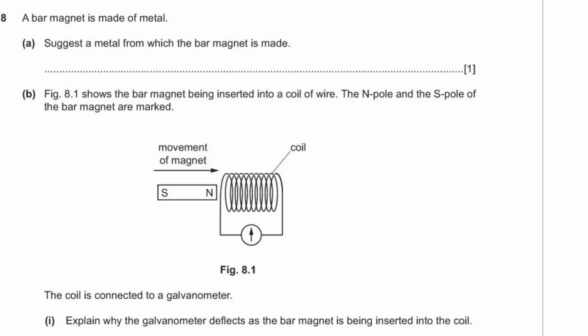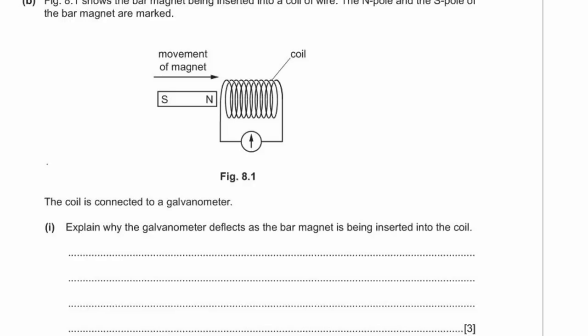Question eight: a bar magnet is made of metal — the best material is steel. Steel is cheap, plentiful, and magnetically hard, meaning once you magnetize it, it keeps its magnetism. Figure 8.1 shows the bar magnet being inserted into a coil of wire connected to a galvanometer, with north and south poles marked.